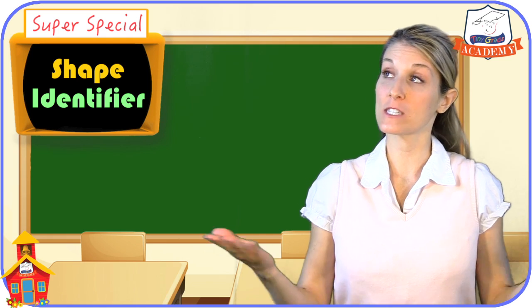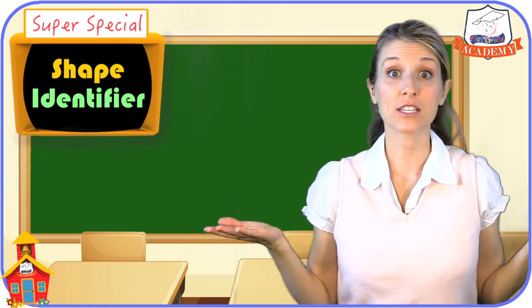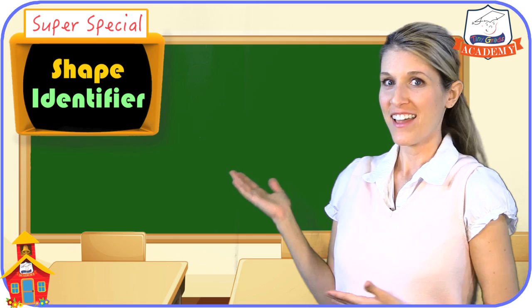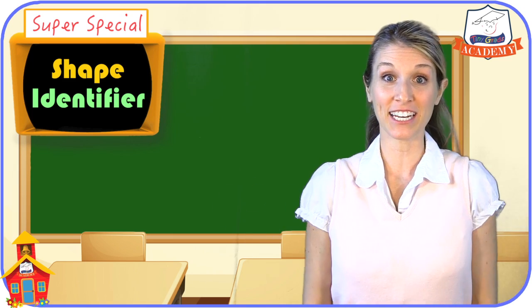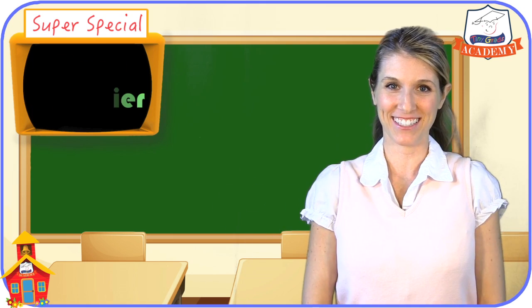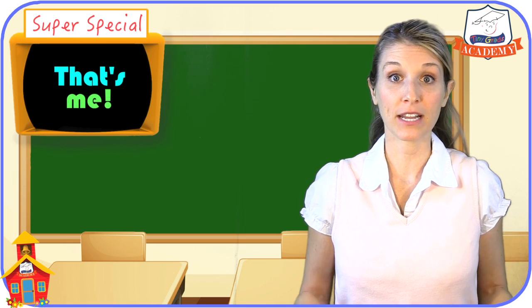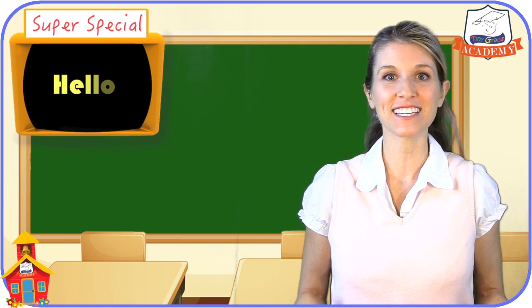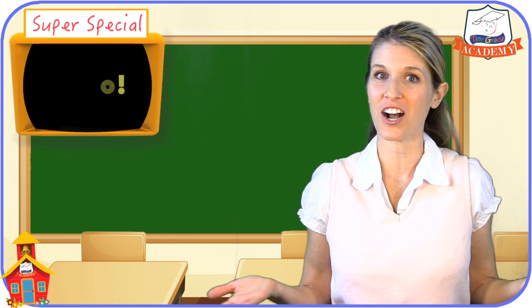We've come into this special classroom today because on this chalkboard behind me is a super special TinyGrads shape identifier machine. The TinyGrads shape identifier machine will automatically tell us what kind of shape is on the chalkboard.